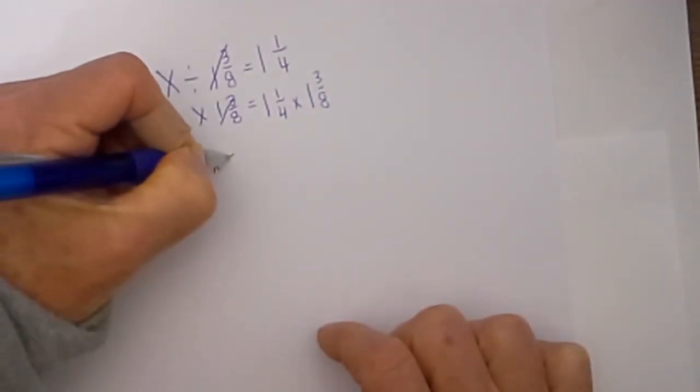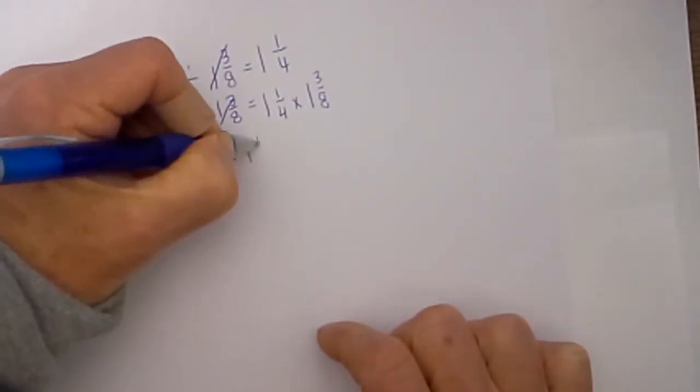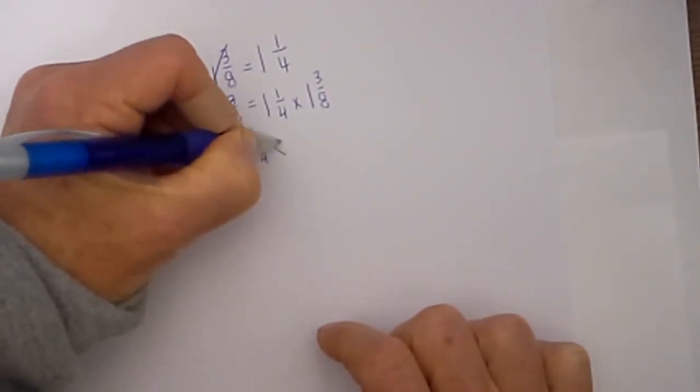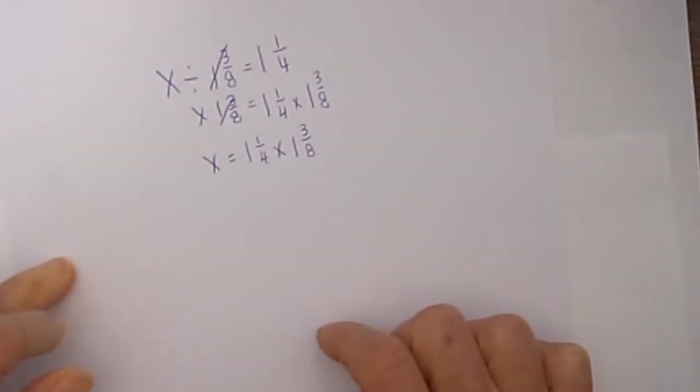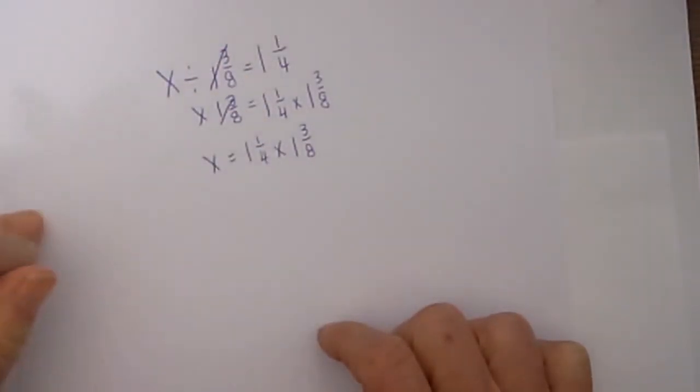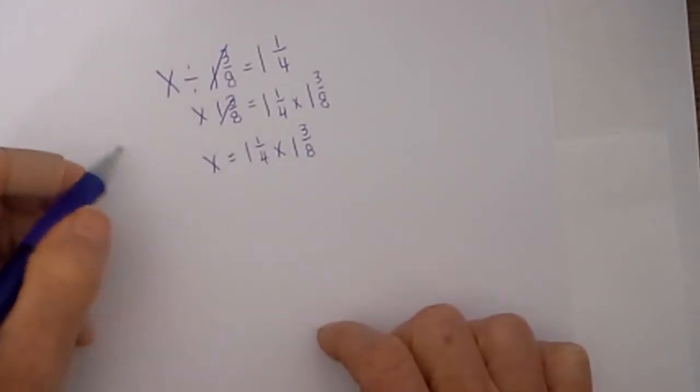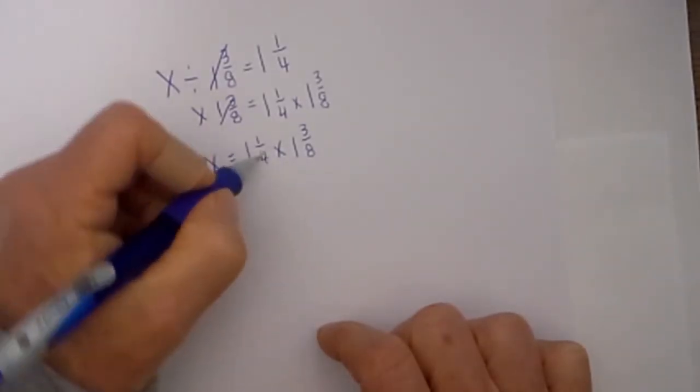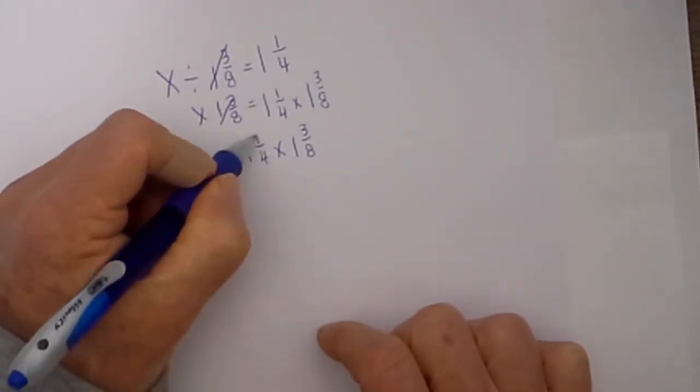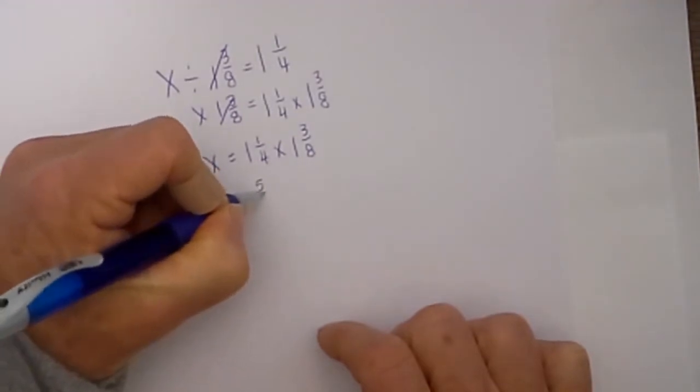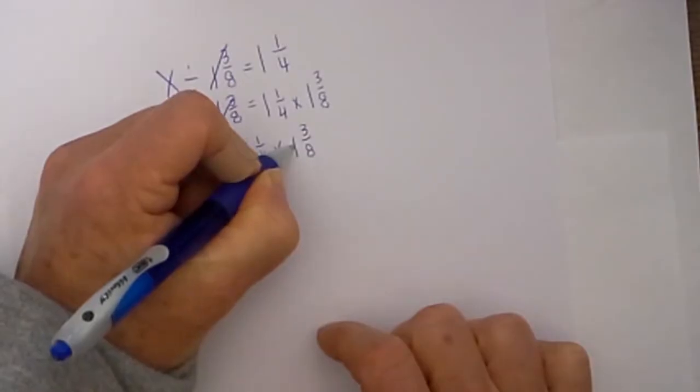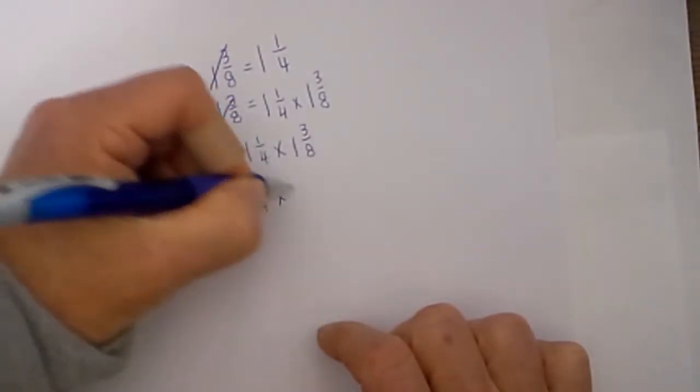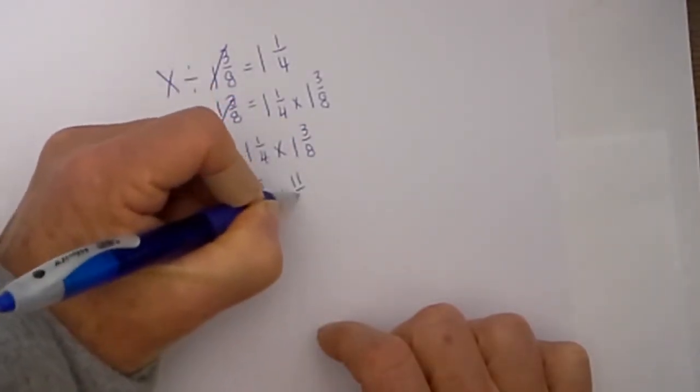We are left with x equals 1 and 1/4 times 1 and 3/8. In order to make this a little easier to work with I will convert it into an improper fraction. So I have 4 times 1 plus 1 is 5 over 4, times 8 times 1 is 8 plus 3 is 11/8.